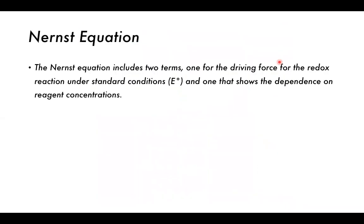That covered the basic components of a cell — cathode, anode reactions, standard reduction potentials, and common reducing/oxidizing agents. Now we move to something more instrumental-chemistry focused: the Nernst equation. The Nernst equation includes two terms — one for the driving force of the redox reaction under standard conditions, and one that shows dependence on reagent concentrations.